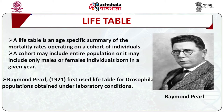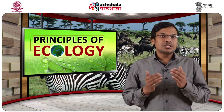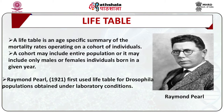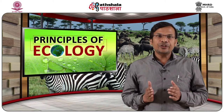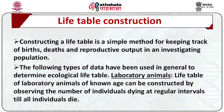A life table is an age-specific summary of the mortality rates operating on a cohort of individuals. A cohort may include the entire population, or it may include only males or females born in a given year. It is widely used by life insurance companies to determine the probability of survivorship for deciding the rate of premium. Ecologists use it in the study of natural populations. Raymond Pearl first used a life table for a Drosophila population obtained under laboratory conditions. Generally, life tables of non-human populations are difficult to construct under field conditions. Constructing a life table is often a simple method for keeping track of births, deaths, and reproductive output in an investigated population.